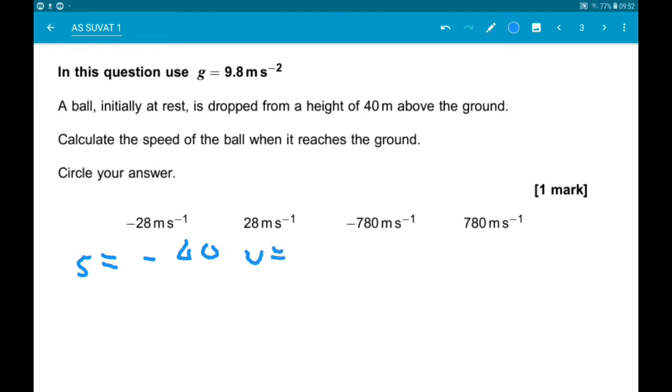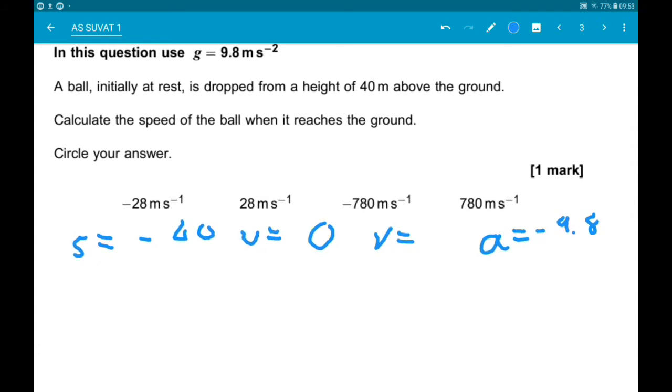The ball is initially at rest, so U is zero. We want V. And A is minus 9.8. Okay, so the equation we want is V squared equals U squared add 2AS.